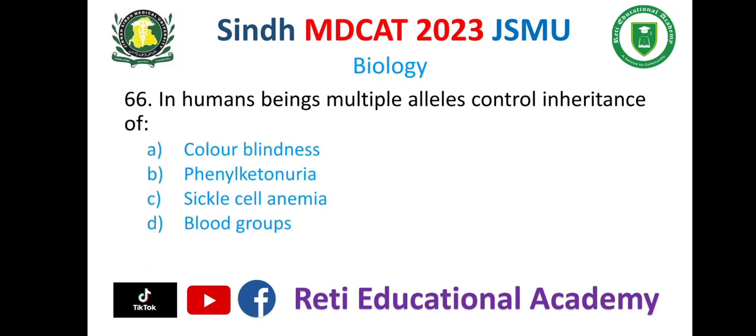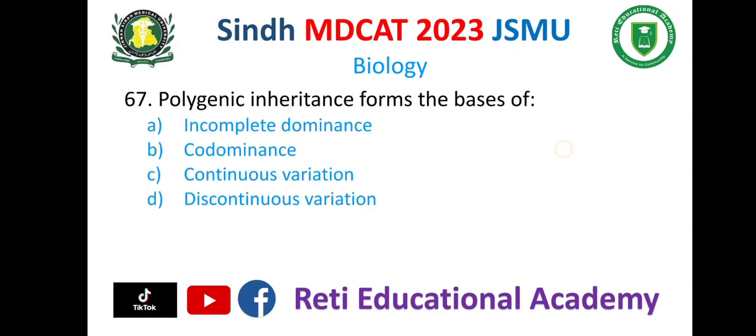Question number 66. In human beings, multiple alleles control inheritance of: A. Colorblindness. B. Phenylketonuria. C. Sickle cell anaemia. D. Blood groups. And the correct option is D. Blood groups.